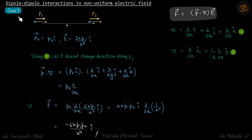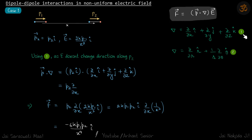Force we are going to calculate in all three cases using this equation only. The del operator in Cartesian coordinates is this form, and in polar coordinates it is this form. As frequently as possible we will try to use the Cartesian one, but if we cannot solve it with that, we will use the polar one. Let's take the simplest case where one dipole is on the axis of another dipole.